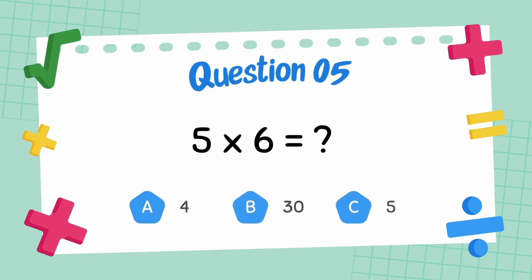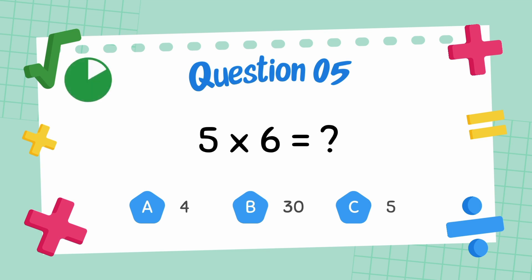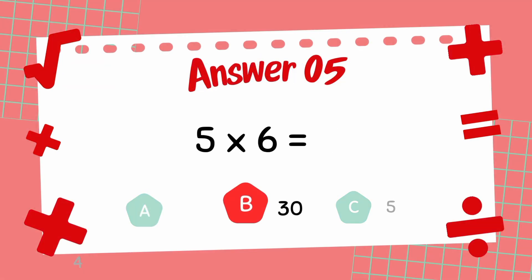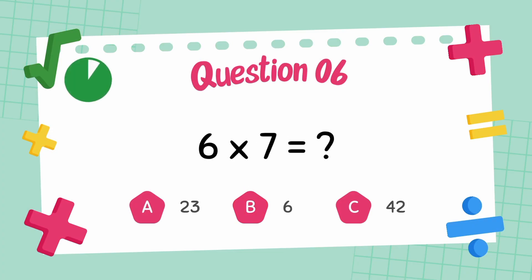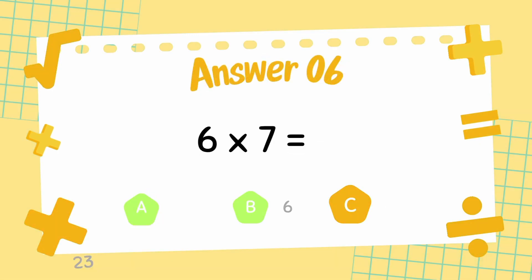What is 5 multiply 6? The answer is 30. What is 6 multiply 7? The answer is 42.